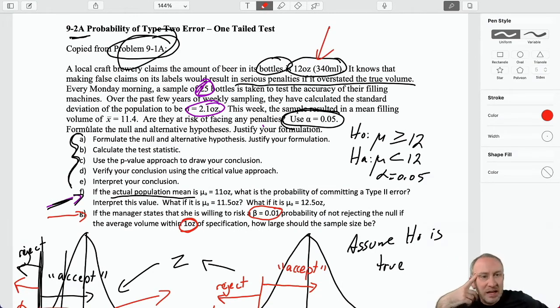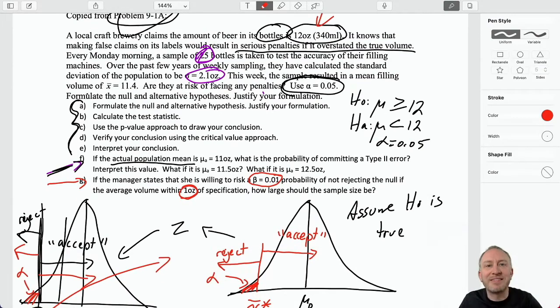If the manager says that she is willing to risk a 1% chance of not rejecting the null, if the average volume is within 1 ounce of specification, how large should the sample size be? So, it should be 12 ounces, right? That is what the bottle of beer here is supposed to be. That's the label on the bottle of beer should be 12 ounces. Here, we're saying, I'm willing to accept a 1% chance of not rejecting it, if it's within 1 ounce of what it says.